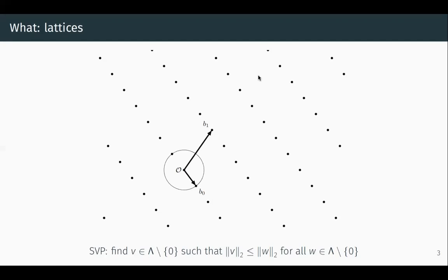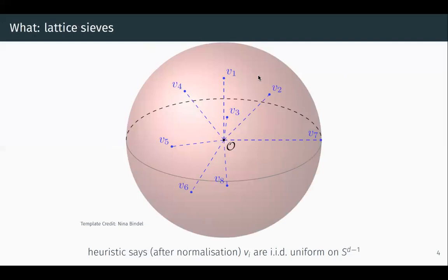The sieves that we consider actually solve an approximate variant of this problem, but it's really much the same. Briefly, how do these sieves work? The first thing that they do is sample a very large number of lattice vectors — a number that is exponential in the dimension of the lattice. And if you're given a basis that has no special structure, which it shouldn't if you're thinking in terms of cryptanalysis, then the vectors you sample this way are going to be very long — in particular, an exponential factor longer than the shortest vector in the lattice.